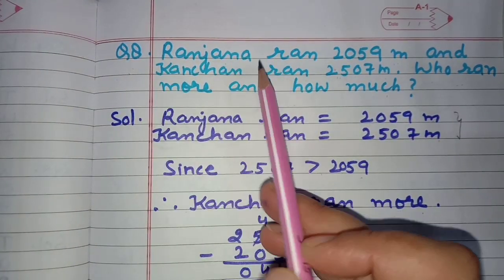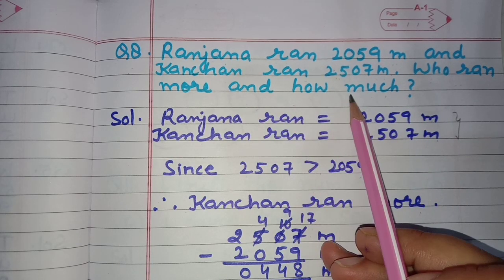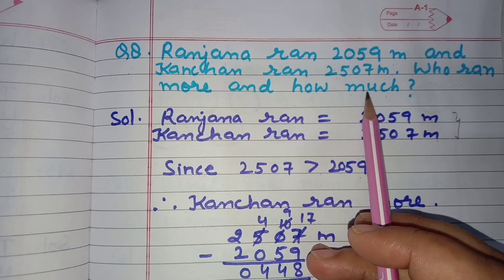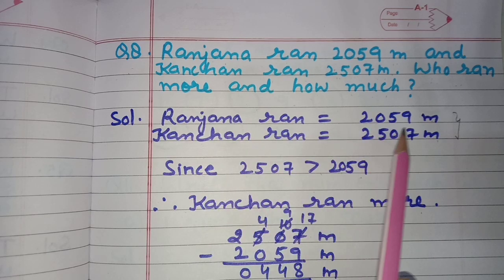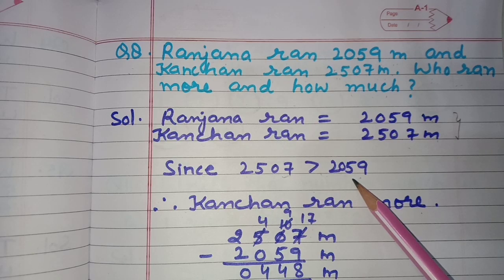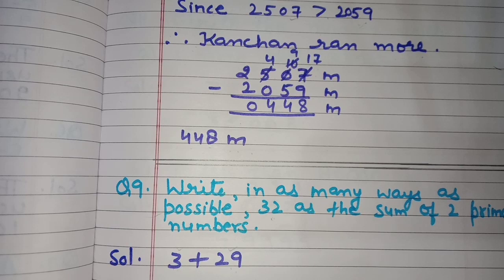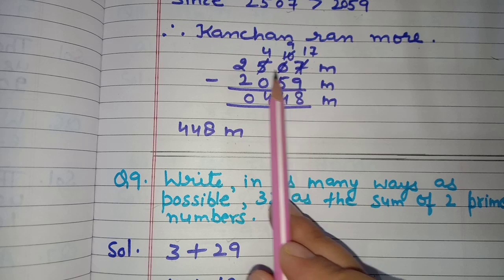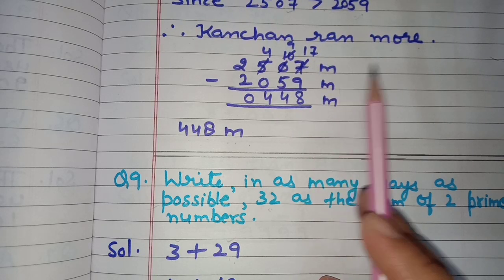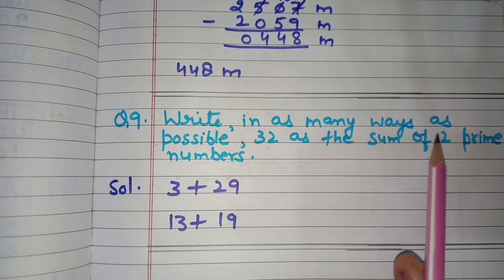Next is question number eight: Ranjana ran 2,059 metres and Kanchan ran 2,507 metres — who ran more and by how much? Ranjana ran 2,059 metres and Kanchan ran 2,507 metres. Since 2,507 is greater than 2,059, Kanchan ran more. To find how much more, we subtract 2,059 from 2,507 and get 448 metres. So Kanchan ran 448 metres more.